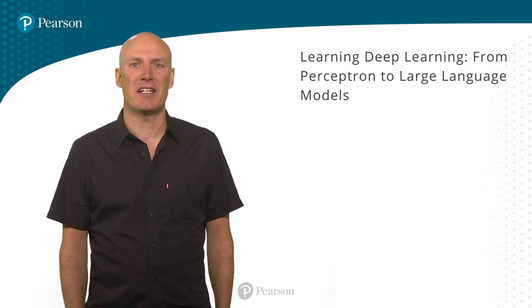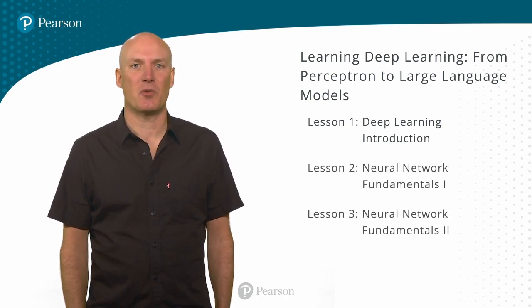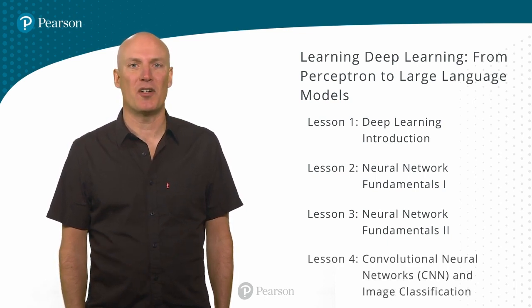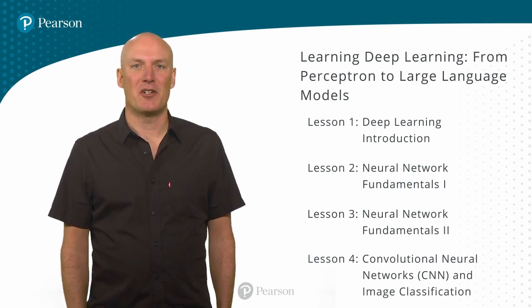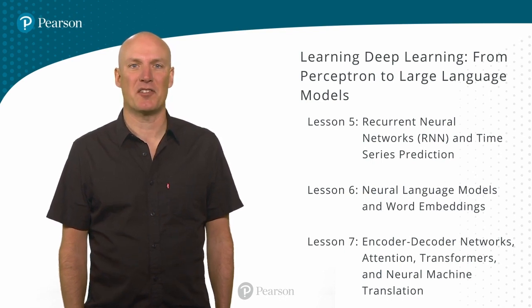The course consists of 11 lessons. In the first introductory lesson, I describe what deep learning is and the course prerequisites. In the next two lessons, I teach neural network fundamentals and basic deep learning concepts. This is followed by lesson four about convolutional neural networks and image classification. You will learn how to build a network that can identify the type of object in an image. The next three lessons, five through seven, are about sequential data and language processing.